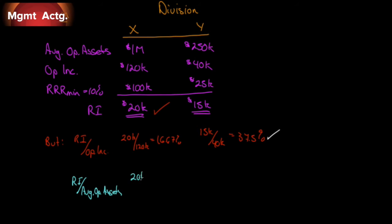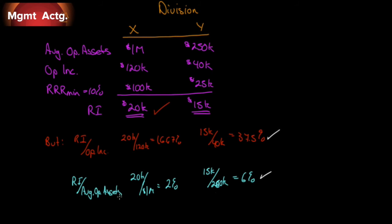Another way to control for size: take residual income divided by average operating assets. Division X has $20,000 divided by $1,000,000, giving 2%. Division Y has $15,000 divided by $250,000, giving 6%. Again, Division Y wins. Once we control for the size of assets by stating residual income as a percentage of them, Division Y is the better performer.